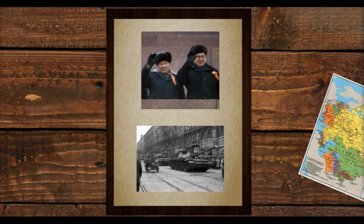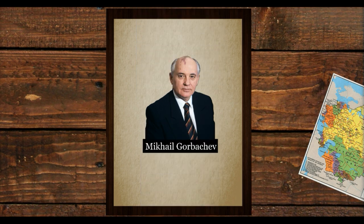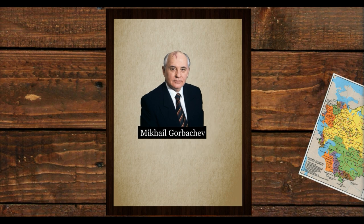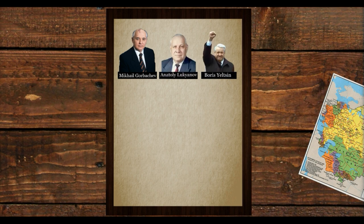Following the death of General Secretary Leonid Brezhnev, the next two successors Yuri Andropov and Konstantin Chernenko both died in the space of a year. The Communist Party was worried that this portrayed the country as being weak on the international stage and looked for a more long-term leader. The 54-year-old Mikhail Gorbachev was sworn in as General Secretary in March 1985 by the party's decision-making body, the Politburo. The Communist Party hoped he would stay in power long-term and strengthen the Soviet's image on the world stage.